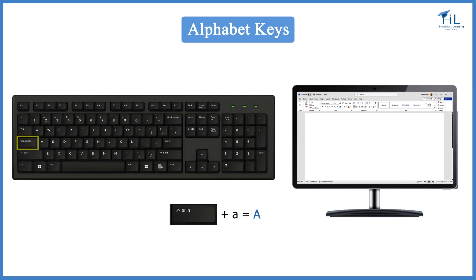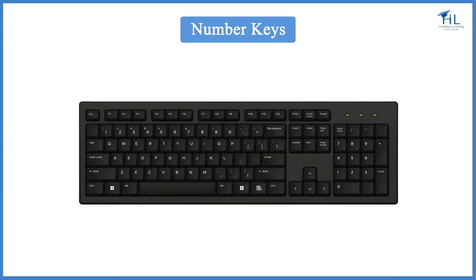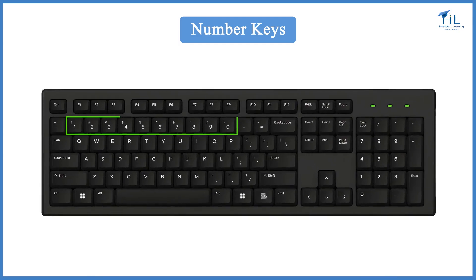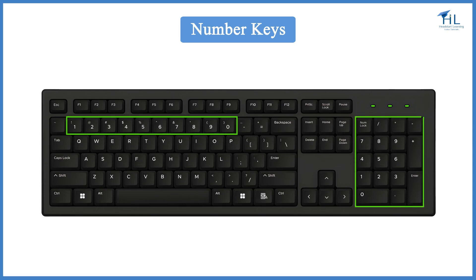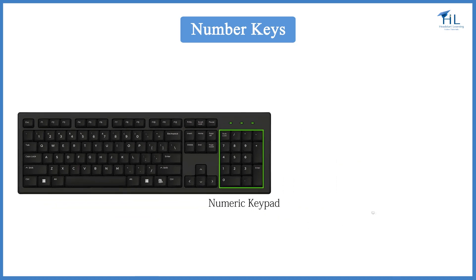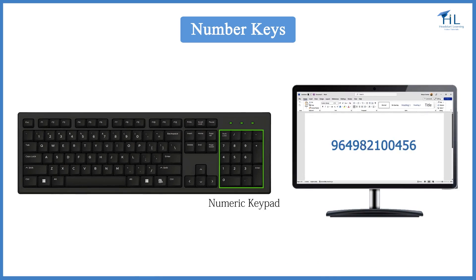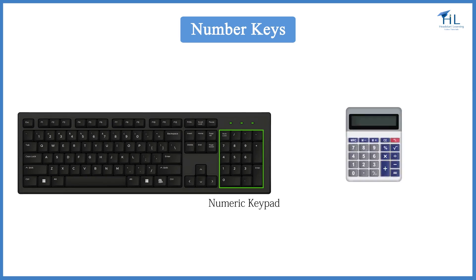After pressing Caps Lock, when we type any letter, it will be capitalized. Number keys are used to type numbers and consist of numbers from 0 to 9. Usually, the keyboard contains two sets of number keys — one on the top row and another on the right-hand side, also known as the numeric keypad. The numeric keypad is used to enter numeric data and control cursor movement, and is laid out in the same configuration used by calculators.